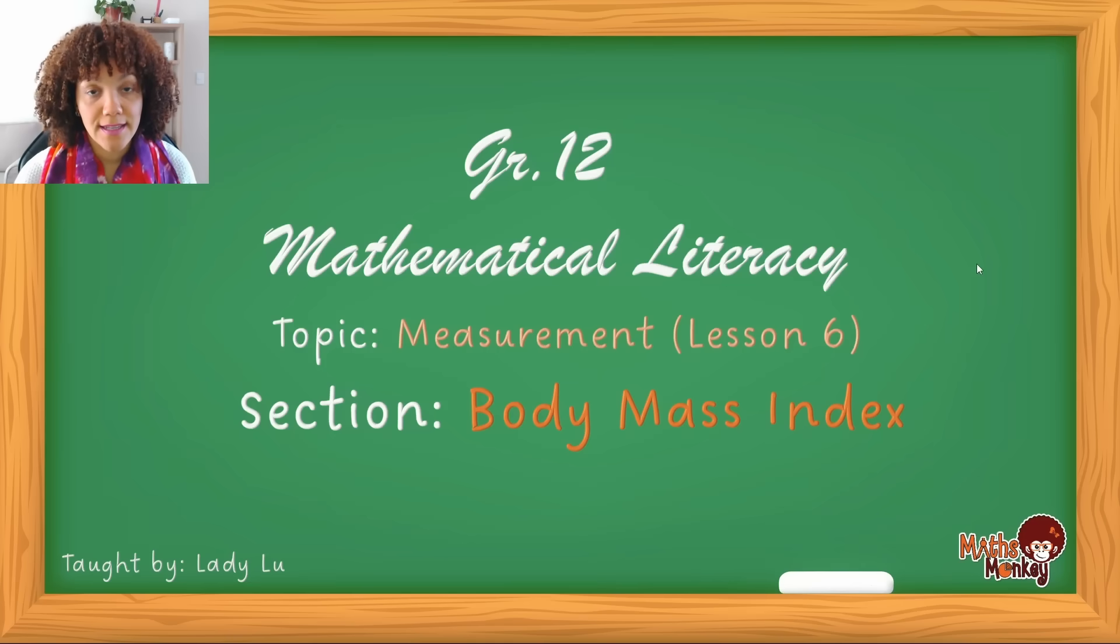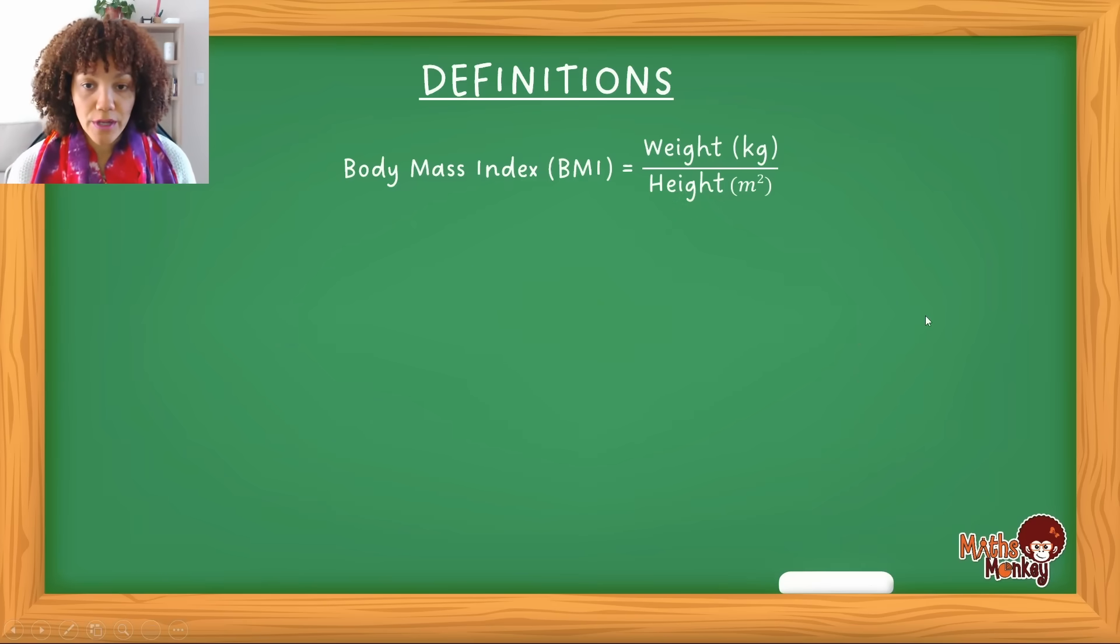All right, so this is the sixth letter under measurement and we're going to be looking at body mass index, BMI. And this is a fairly simple concept. I'm going to first explain the concept and then I'm going to go through some examples with you. So if we look, we have to obviously understand what body mass index actually is and what it means so that you know what it is that you're calculating.